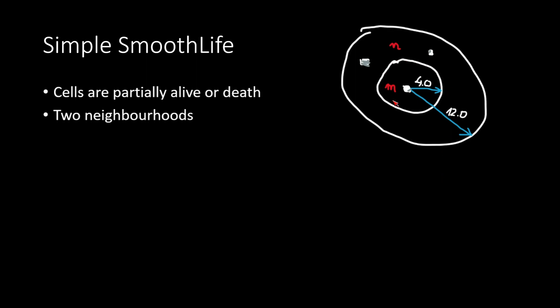One is the inner circle, and the other is the outer two-dimensional torus. And in order to calculate density, you have to integrate over those two figures.